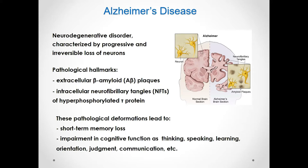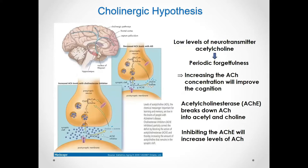One of the biochemical factors related to cognitive dysfunction is the continuous loss of the neurotransmitter acetylcholine. Therefore, increasing acetylcholine levels will improve cognition. This can be done by inhibiting the enzyme acetylcholinesterase, which is located in the synaptic clefts and is responsible for breaking down acetylcholine into choline and acetate. This concept lies in the cholinergic hypothesis for symptomatic treatment of the disease.